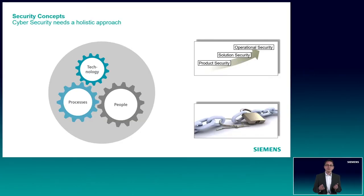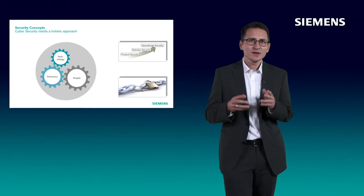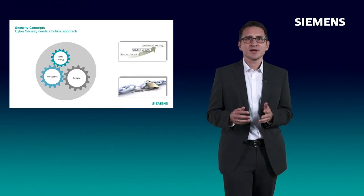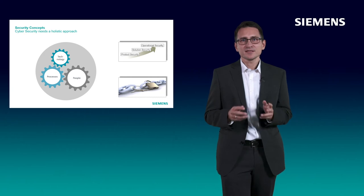For example, substation automation products must provide certain cybersecurity features. The solution provider must build a secure solution and implement the cybersecurity controls. The operator must make use of the cybersecurity capabilities during operation, because the cybersecurity chain is only as strong as its weakest link.